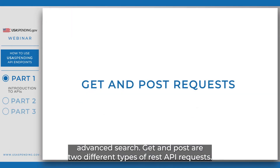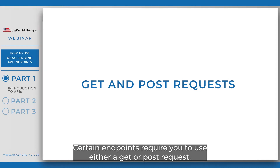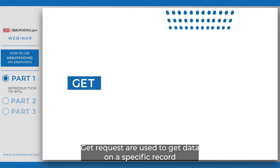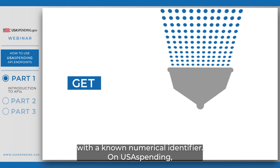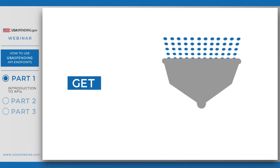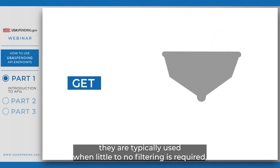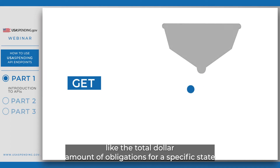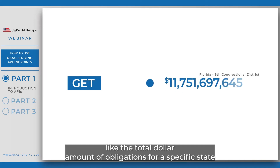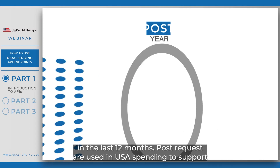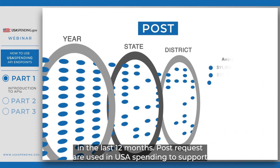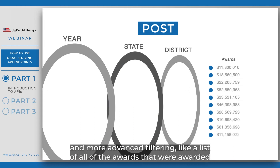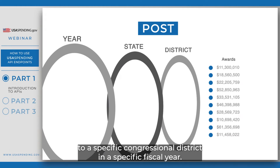GET and POST are two different types of REST API requests, and certain endpoints require you to use either one. GET requests are used to get data on a specific record with a known numerical identifier — on USA Spending they are typically used when little to no filtering is required, like the total dollar amount of obligations for a specific state in the last 12 months. POST requests are used to support more advanced filtering, like a list of all awards given to a specific congressional district in a specific fiscal year.